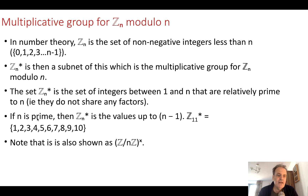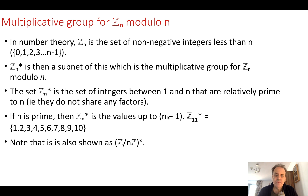If n is prime, then none of the values will have factors equal to the prime number, so we end up with a field containing all numbers up to n minus 1. For example, Z11* — since 11 is prime — will contain all values from 1 to 10.